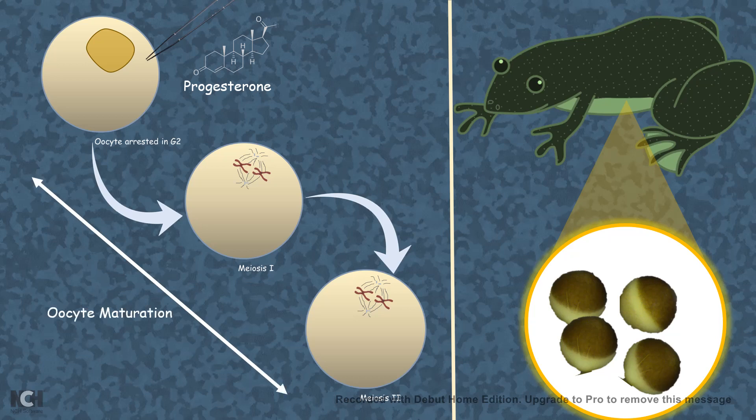So some substance, such as progesterone, lead to oocyte maturation. And this is true. Mostly progesterone help in maturation of the oocyte, right?